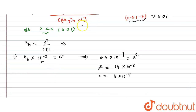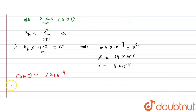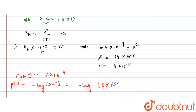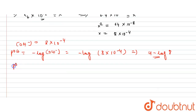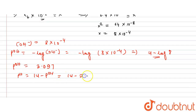Taking the square root, x = 8 × 10⁻⁴. Since [OH⁻] = x = 8 × 10⁻⁴, we calculate pOH = −log(8 × 10⁻⁴) = 4 − log 8 ≈ 3.097. Therefore, the initial pH = 14 − pOH = 14 − 3.097 = 10.903.